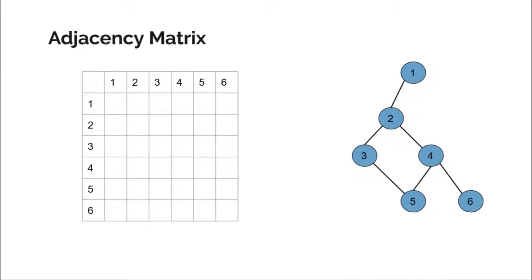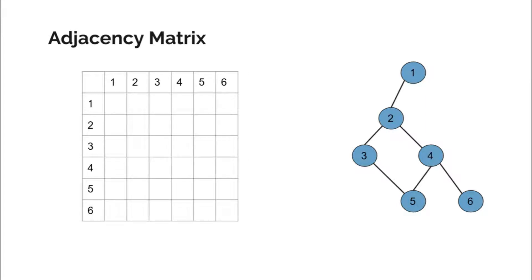The first one is the adjacency matrix method. In this method we have a matrix of size n×n if there are n number of nodes. Here we can see that there are six nodes in this current graph. So we have a 6×6 matrix. Each row — the i-th row — represents the information for the i-th node, and the cell (i,j) contains value 1 if node i and j are connected, else it is 0.